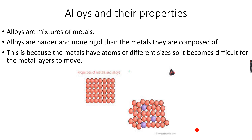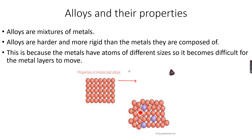When you get a mixture of metals, it is called an alloy. Alloys are harder and more rigid than the metals they are composed of. In a pure metal structure, the layers can slide, which is why metals are malleable and ductile. However, in an alloy, because the different metal atoms are different sizes, the layers cannot slide, and that's why alloys are rigid.